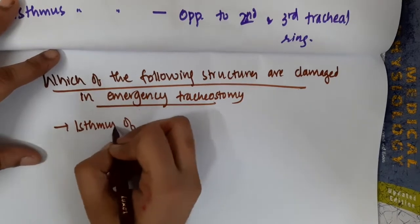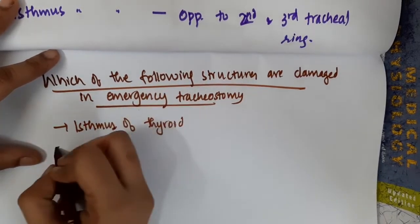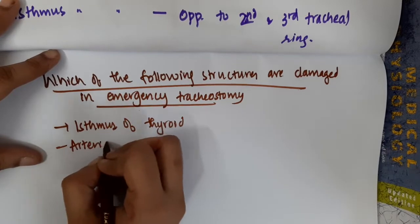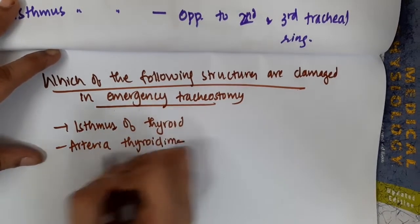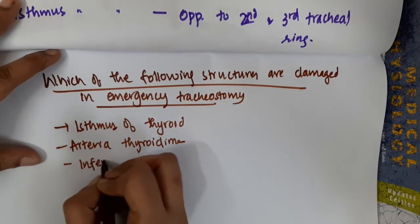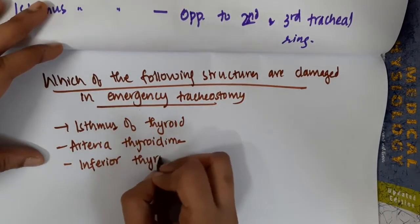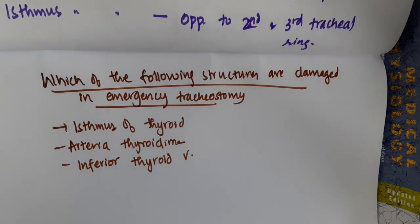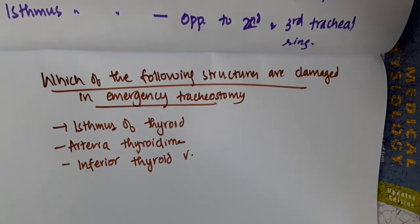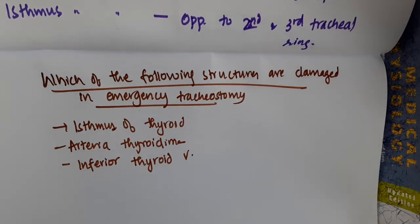In emergency tracheostomy, the isthmus of thyroid, the anterior jugular vein, and the inferior thyroid vein are the structures that are damaged.